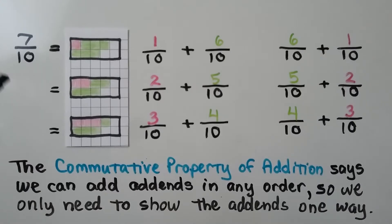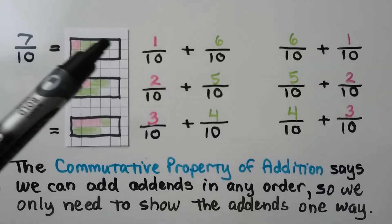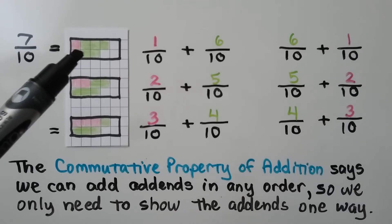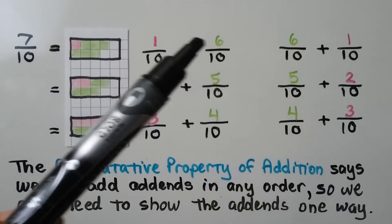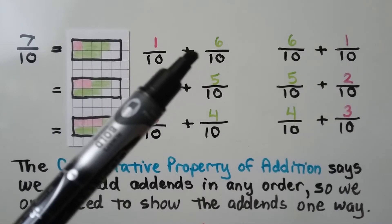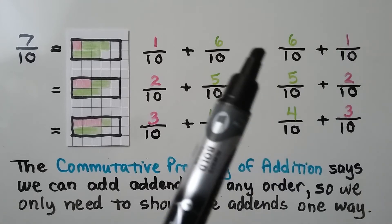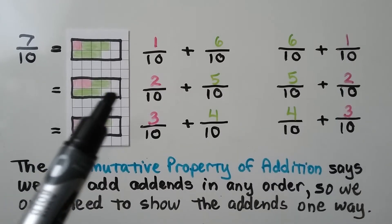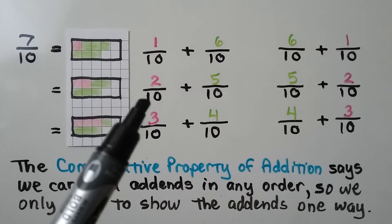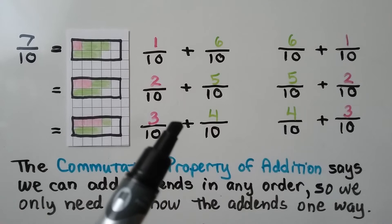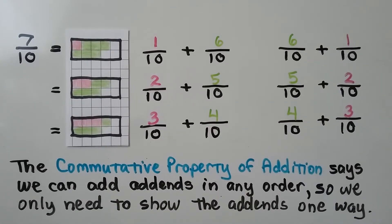Here we have 7 tenths. That means out of 10 squares, 7 are colored in. We can break the 7 into a 1 and a 6 for 1 tenth plus 6 tenths, or write it as 6 tenths plus 1 tenth — we could change the order. We could write it as 2 tenths plus 5 tenths, or 3 tenths plus 4 tenths. The commutative property of addition says we can add addends in any order and get the same sum.